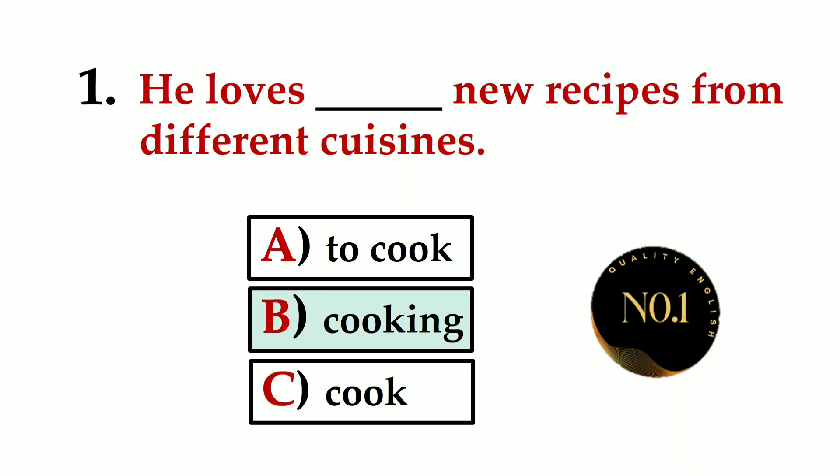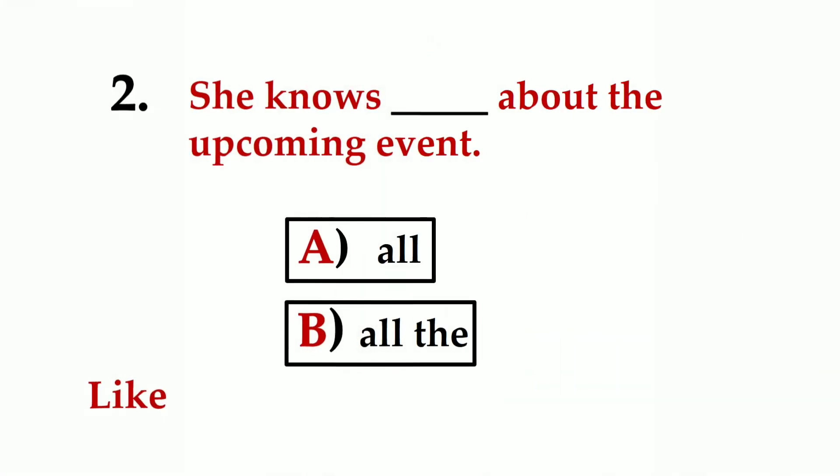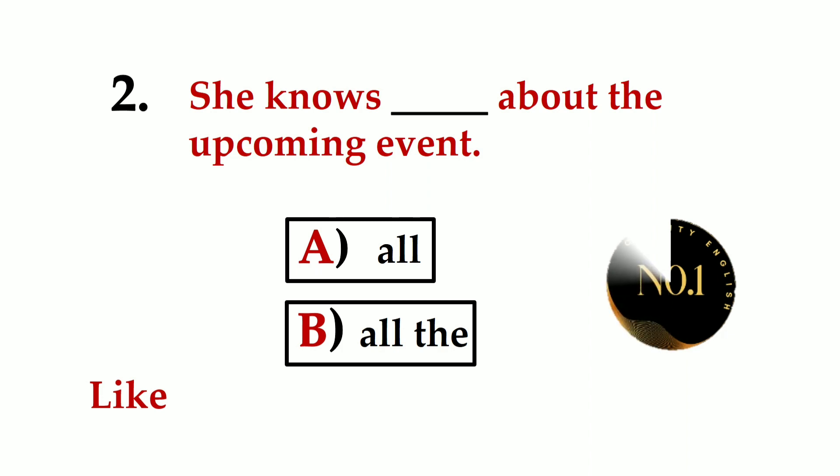Number two: She knows ___ about the upcoming event. A) all, B) all the. The correct answer is A) all.